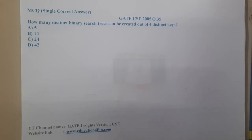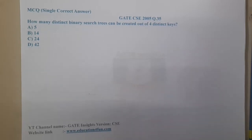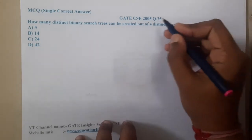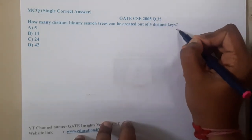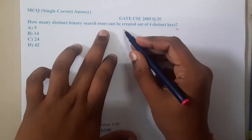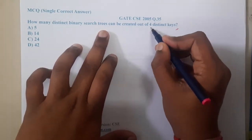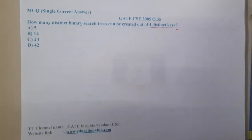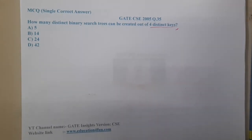Hello guys, we are back with our next lecture. In this lecture, let us go through the next question. That is GATE CSE 2005 Question 35. The question is: how many distinct binary search trees can be constructed on four distinct keys? Basically, this question is also a type of repeated question.